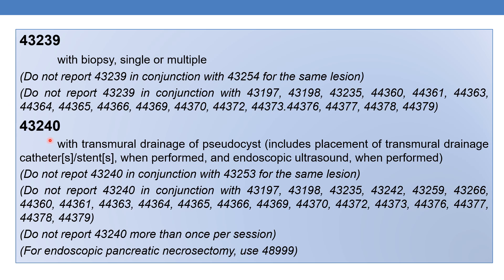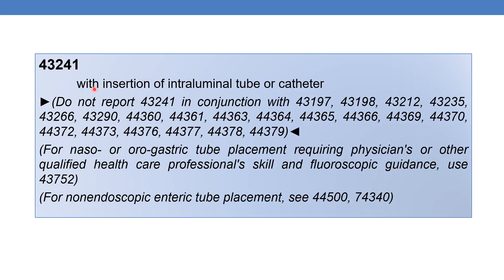The next CPT is 43240. It deals with esophagogastroduodenoscopy, flexible, transoral, with transmural drainage of pseudocyst. It includes placement of transmural drainage catheter or stent when performed, and endoscopic ultrasound when performed. Do not report 43240 more than once per session. The next CPT is 43241: esophagogastroduodenoscopy, flexible, transoral, with transendoscopic ultrasound-guided insertion of intraluminal tube or catheter. For nasogastric or orogastric tube placement requiring physician skill and fluoroscopic guidance, use 43752.